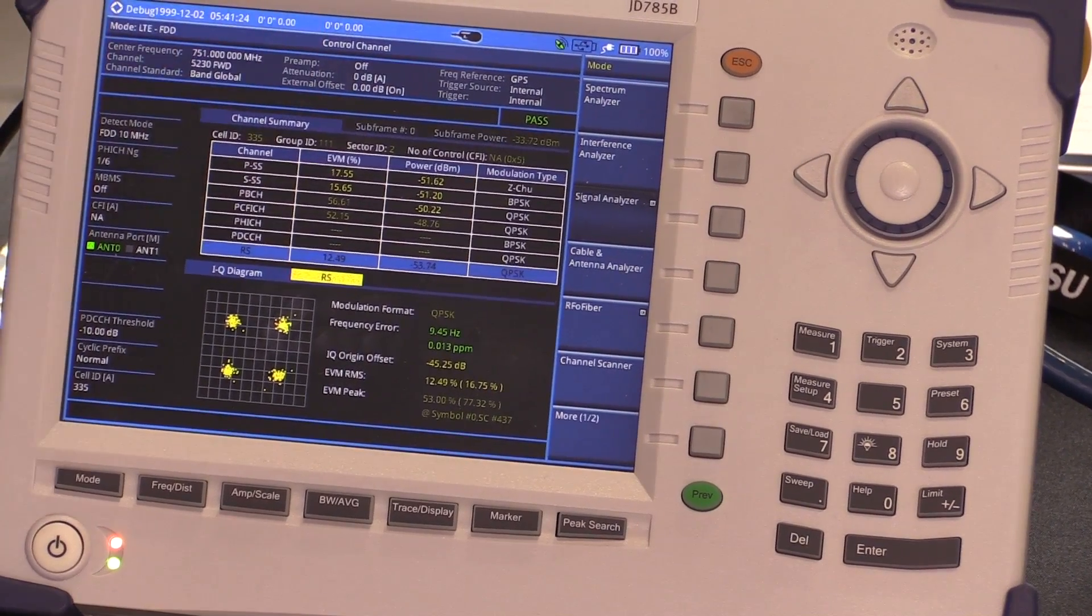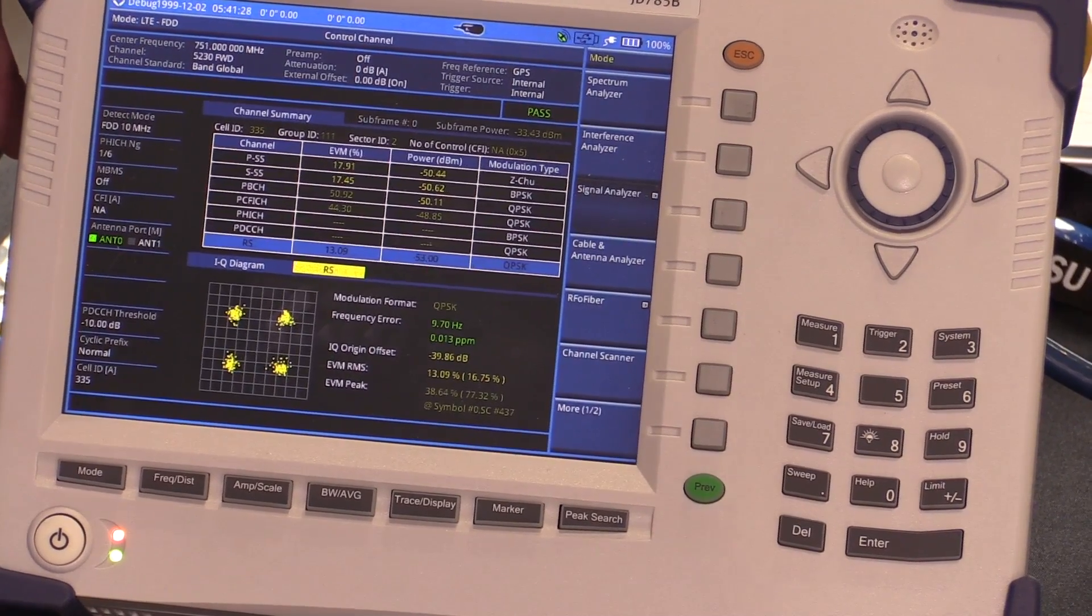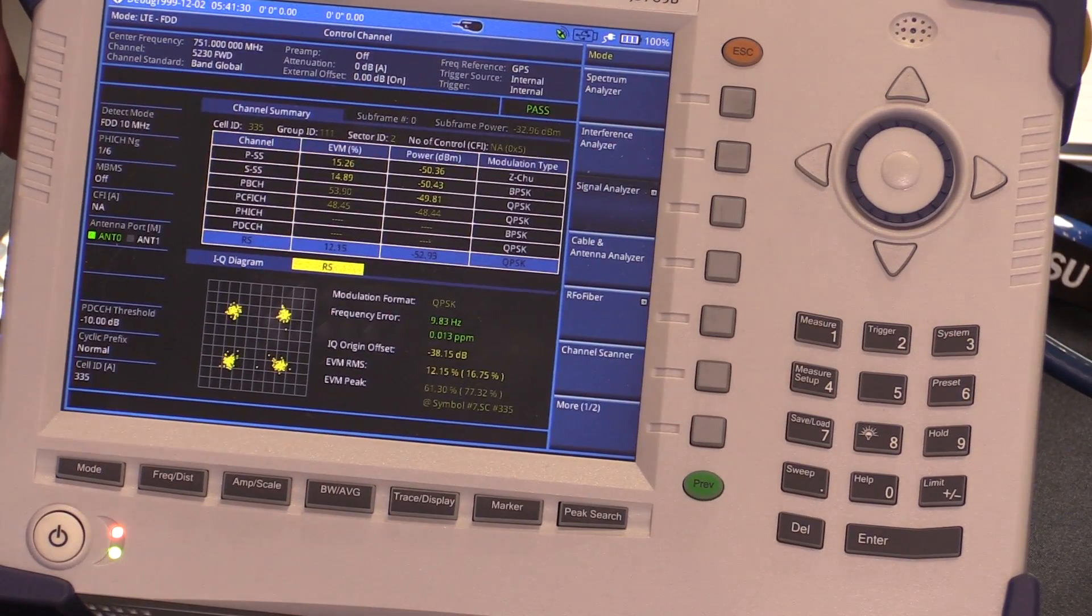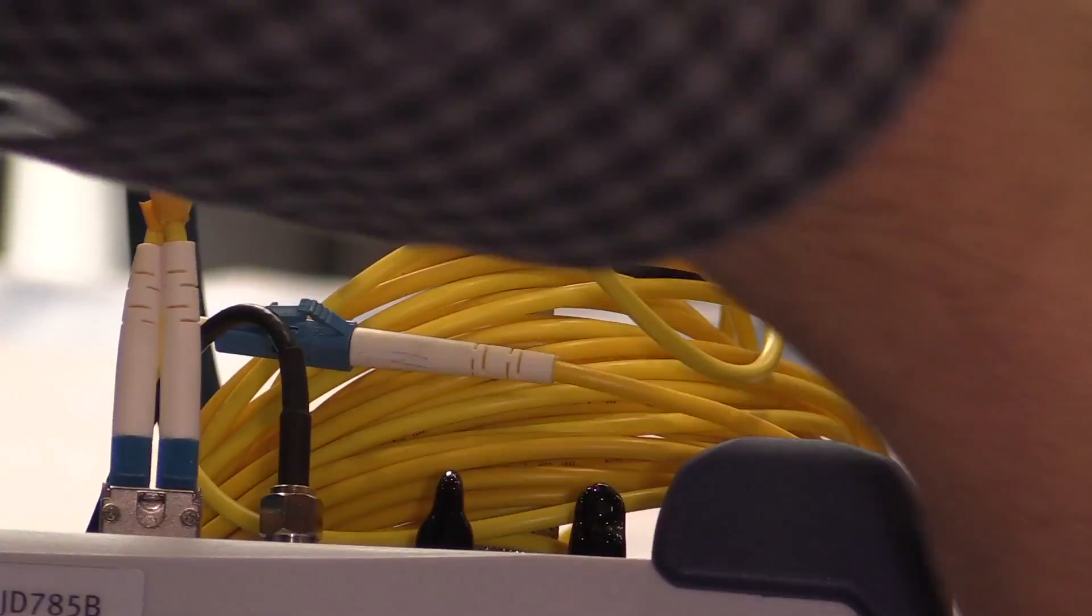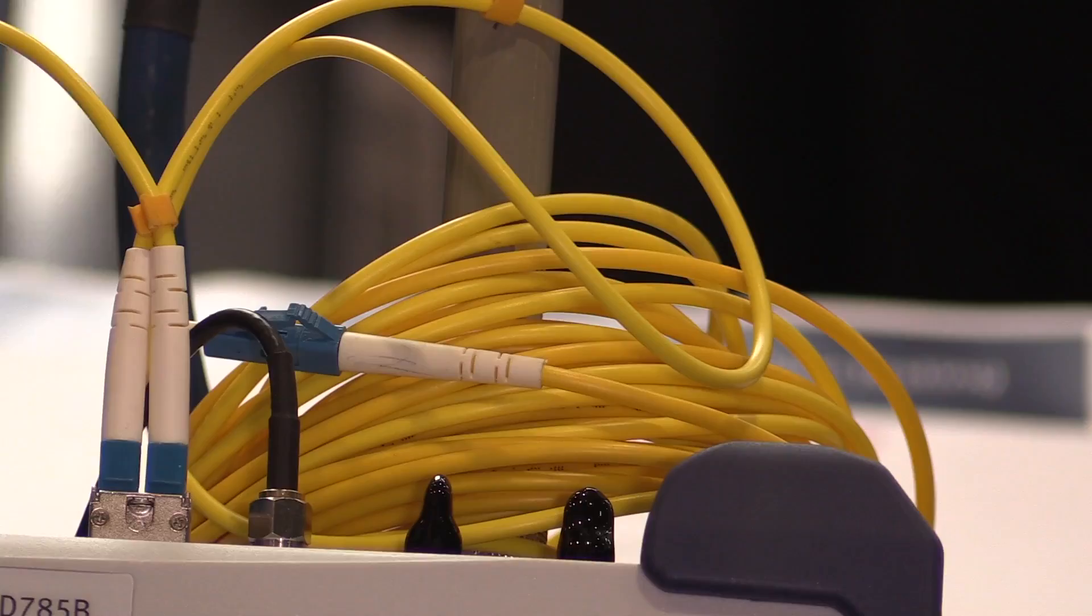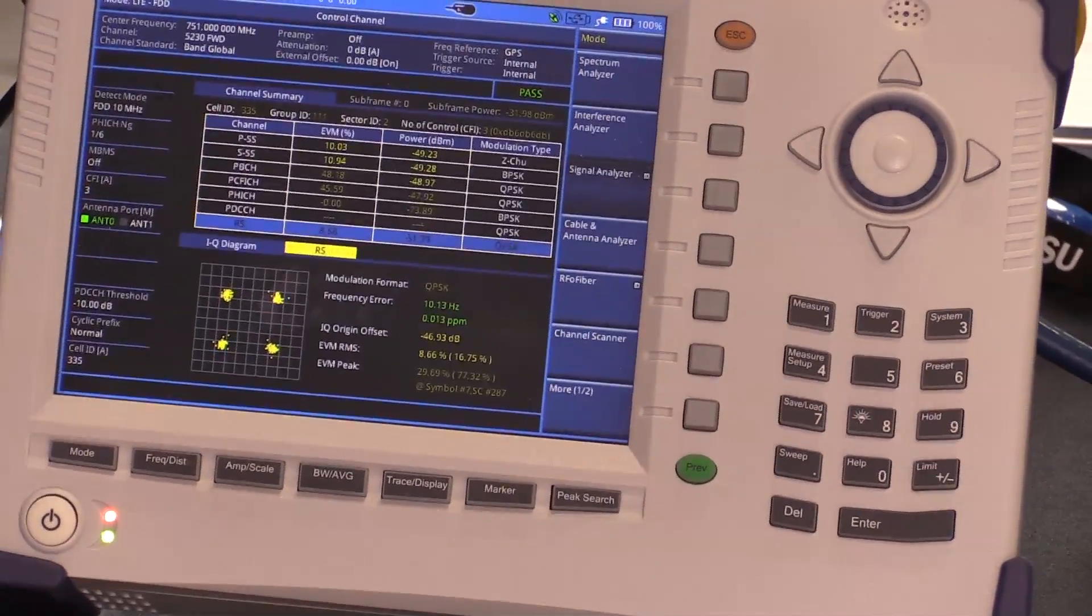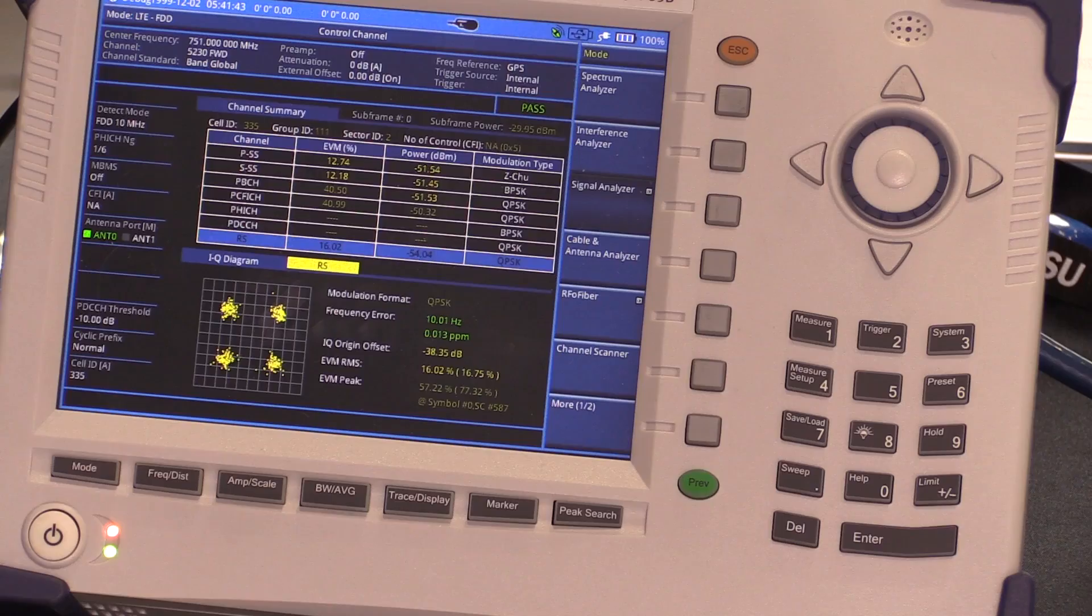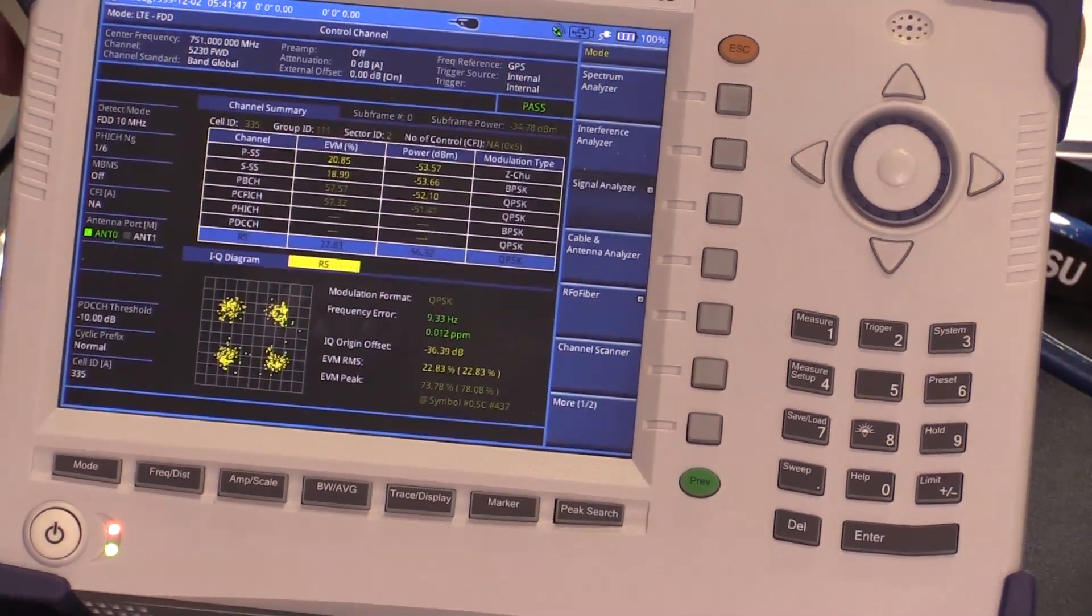One of the key features for this box, the 785B specifically, is we've added the capability of measuring fiber-connected radios. It's with a fiber SFP that can be installed and allows you to see the RF that's going back and forth over the fiber.